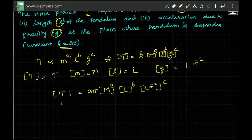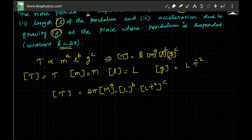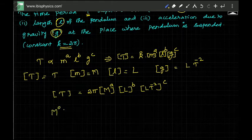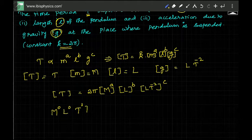Here T is there. On the right hand side M, L and all there. If something is not there, anything power 0 is 1. So M^0, L^0 and T power basically 1. These are the dimensions on the left hand side.